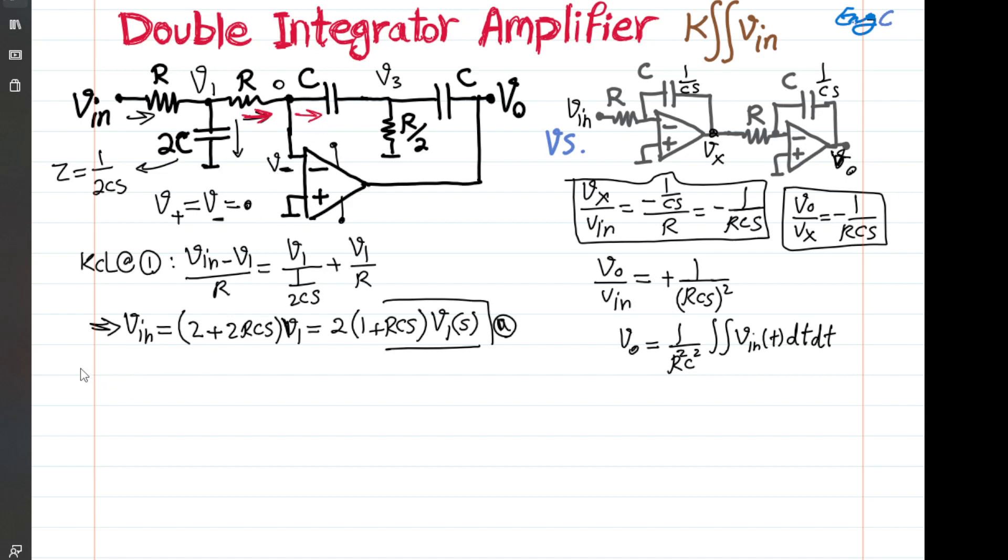So that current should go through the cap. Therefore, we can write for KCL at the negative terminal, we can write V1 over R should be equal to zero minus V3 divided by impedance of cap. And impedance of cap is just 1 over CS. So in this case, what we learn is V1 is simply minus RCS V3.